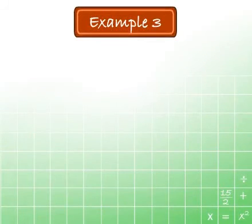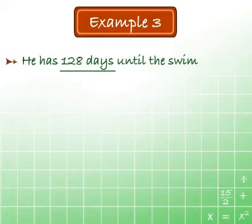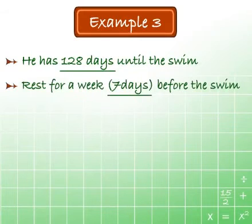Let us now move on to an applied example. Example 3. A swimmer is preparing for the mid-mile mile. He has 128 days until the swim and plans to rest for a week before the swim.